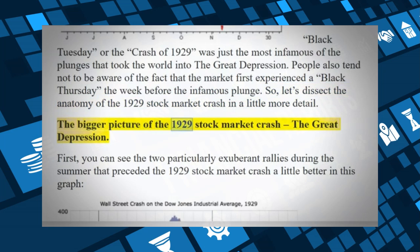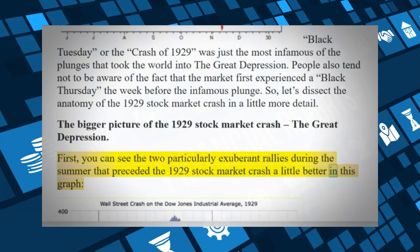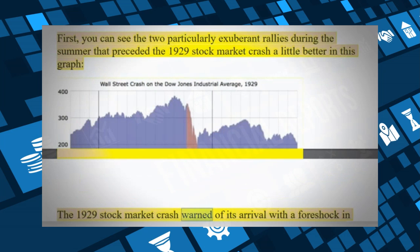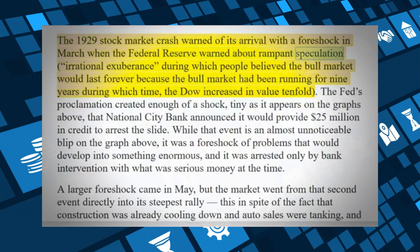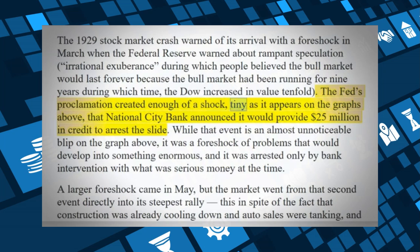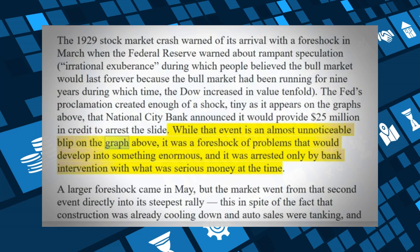The bigger picture of the 1929 stock market crash and the Great Depression: You can see the two particularly exuberant rallies during the summer that preceded the crash. The 1929 crash warned of its arrival with a foreshock in March when the Federal Reserve warned about rampant speculation — a rational exuberance during which people believed the bull market would last forever, as it had been running nine years with the Dow increasing tenfold. National City Bank announced $25 million in credit to arrest the slide, which was a foreshock of enormous problems to come.